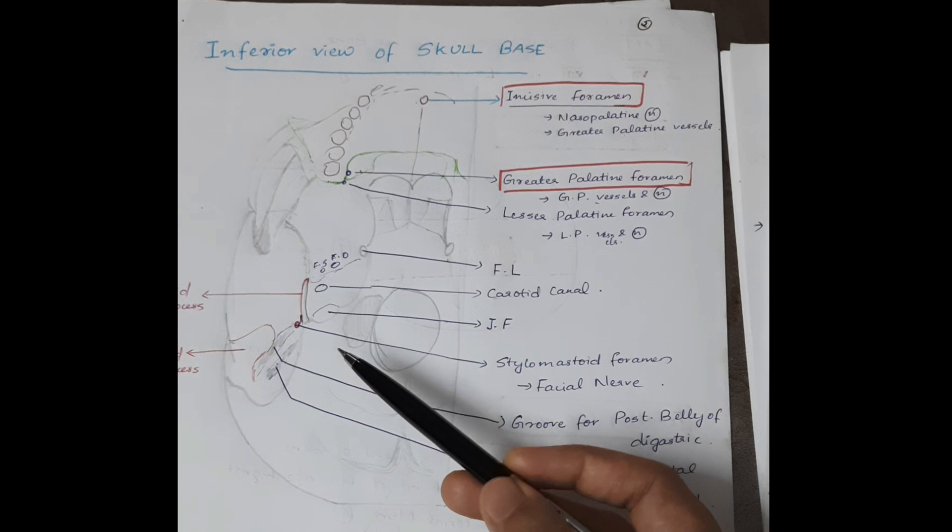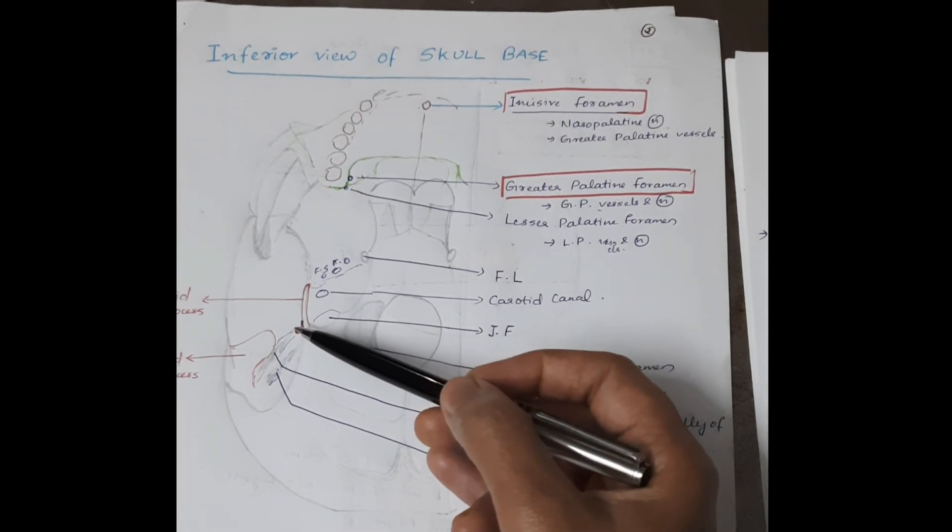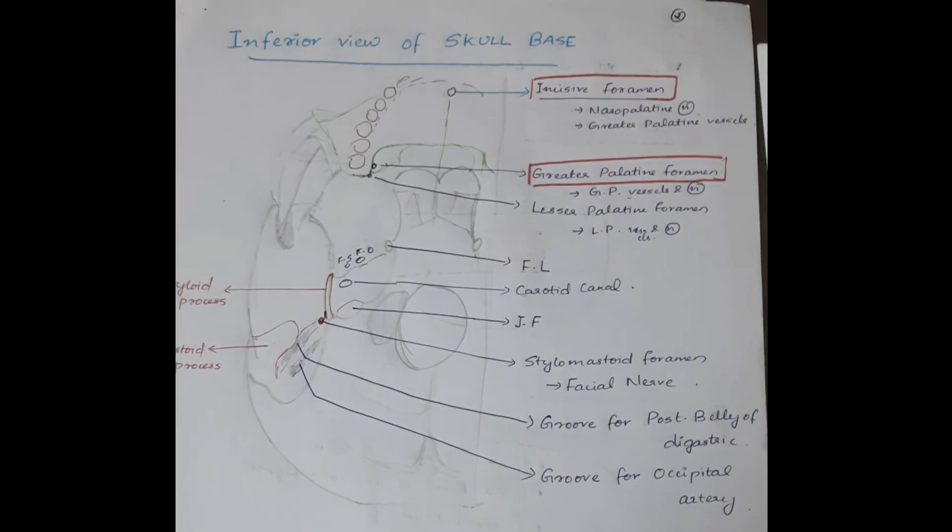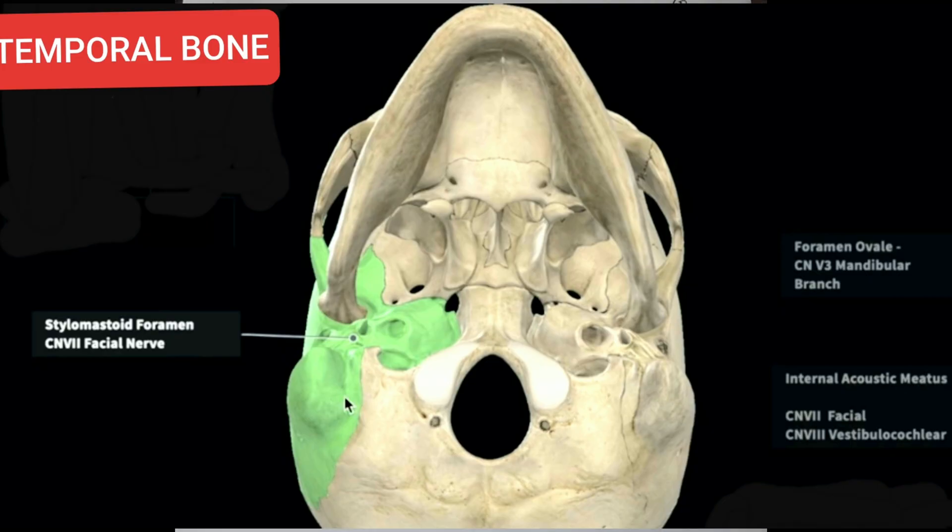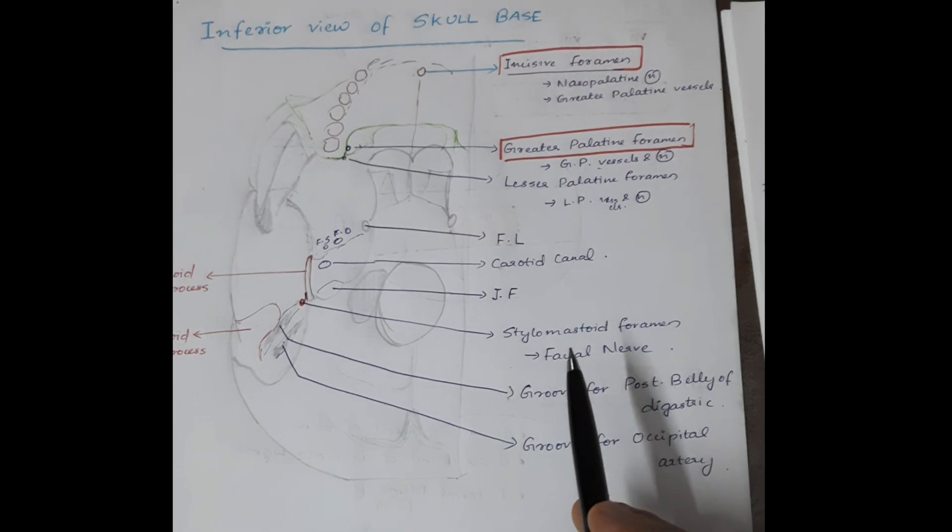Next is the stylomastoid foramen. Near the styloid process, the stylomastoid foramen is present between the styloid process and the mastoid process. Through the stylomastoid foramen, the facial nerve passes.